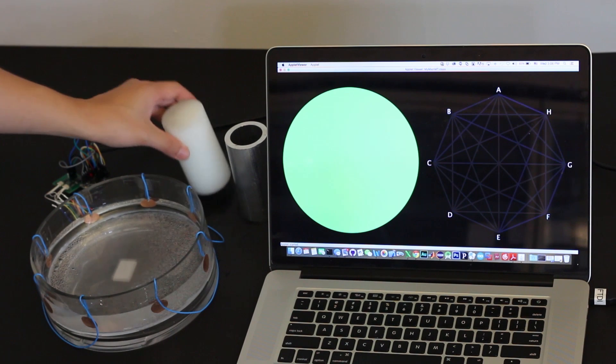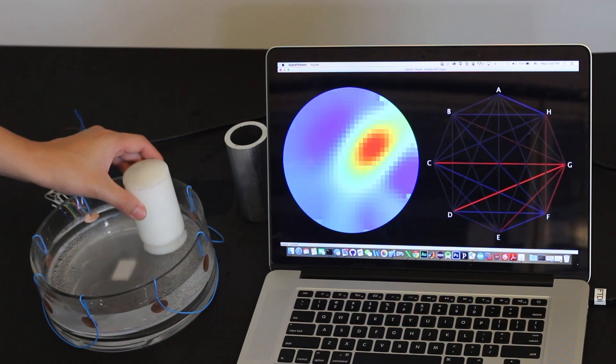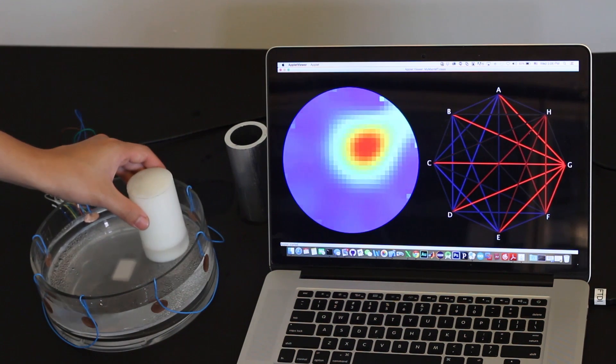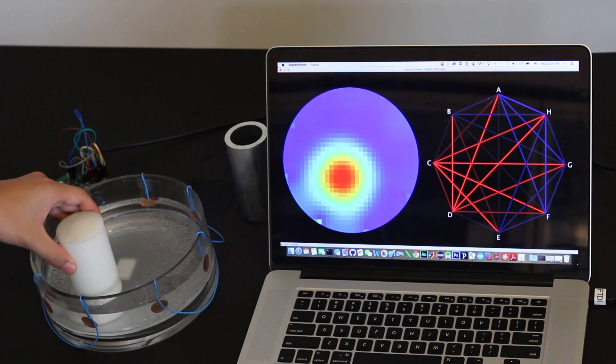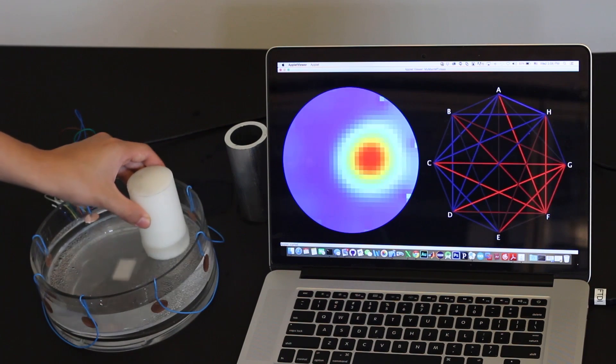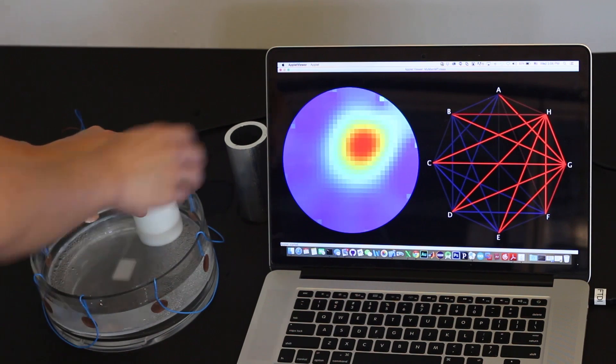Here you can see a basic test of our system using a bath of water. If we dip a cylinder made of plastic into the water, you can see a red circle appear on the visualization, denoting the location of a high impedance object.